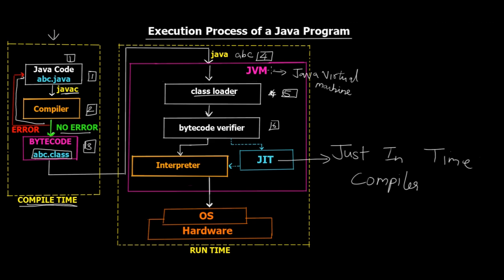We've seen that JVM, JRE, and JDK are not portable — however, the bytecode is portable. After step six, step seven occurs. If the JIT compiler is invoked (it's not always invoked), that would be step seven, followed by step eight, and finally step nine where the output is shown on the console — or a GUI is loaded if it's a Windows application. This was the overall execution process.